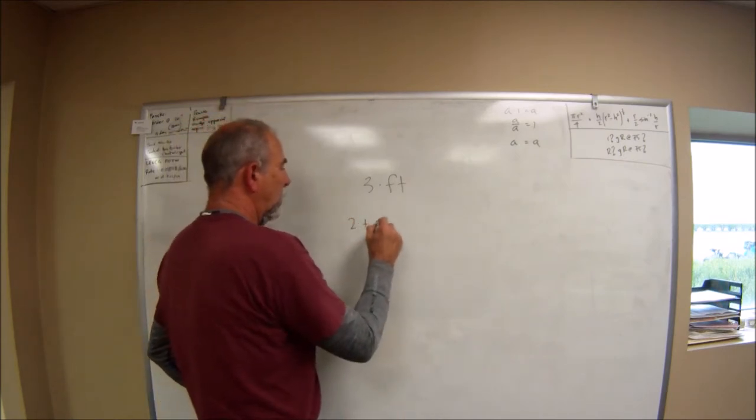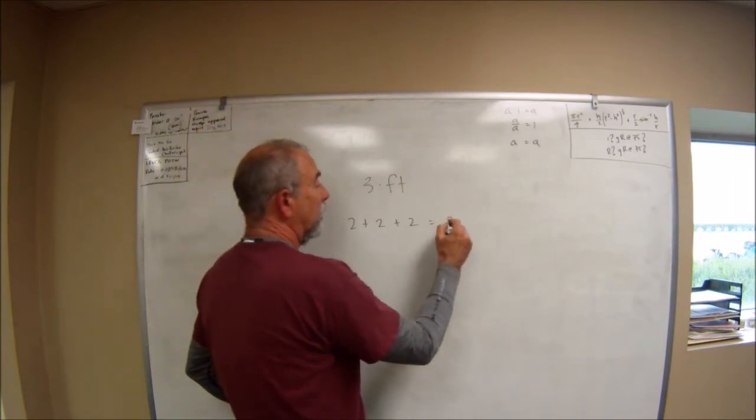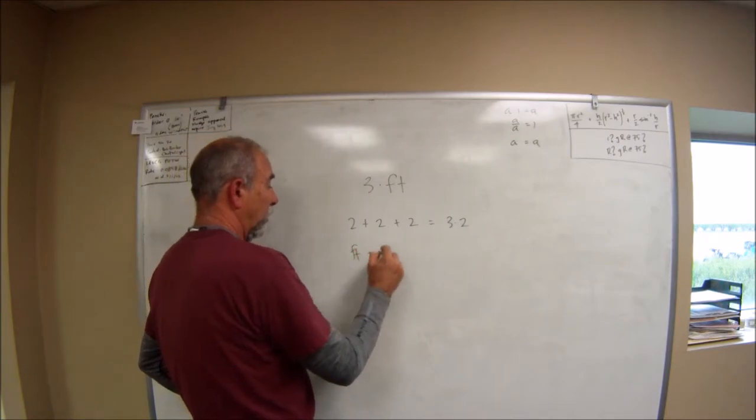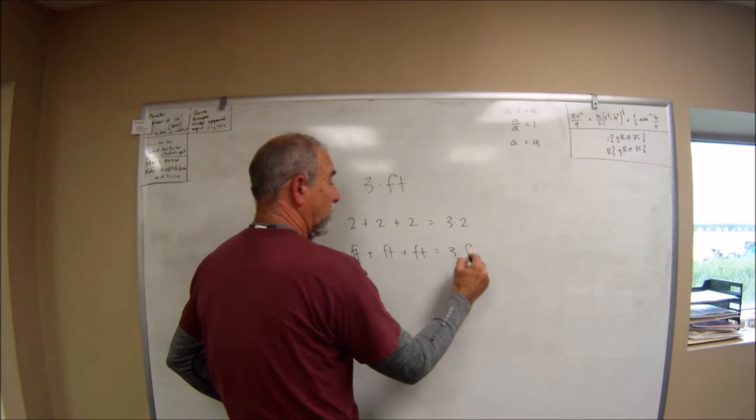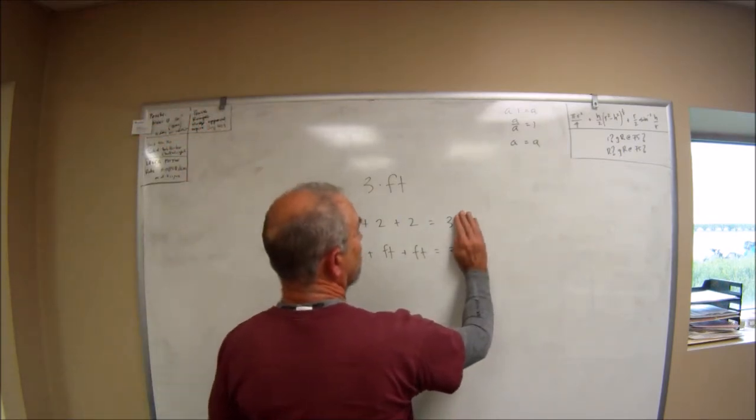If you had two plus two plus two, you would readily agree that we could write that as three times two. Well in this case we've got a foot plus a foot plus a foot, and that equals three times foot. So if we lose track of the foot, it's just as big an error as if we lost track of the two.